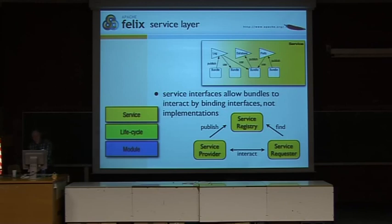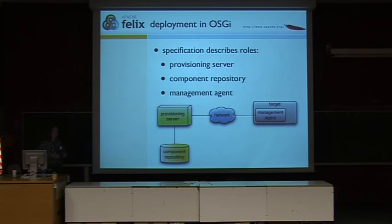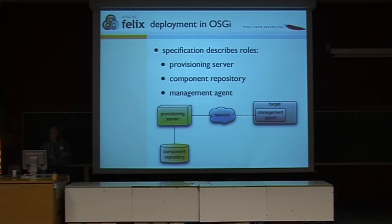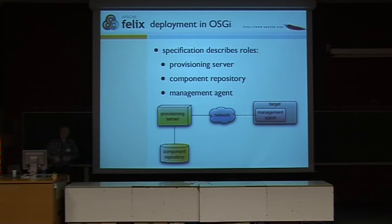That's basically the OSGI framework itself. Now, onto deployment. If you look at the specification, it actually only specifies a couple of very generic roles. There's a management agent, which is just a bundle you install into your framework and it is responsible for installing and updating components. It talks over the network to some provisioning server, which has a component repository where you can get new stuff from. That's basically all that was originally defined about how to do deployment and how to provision components to a system.